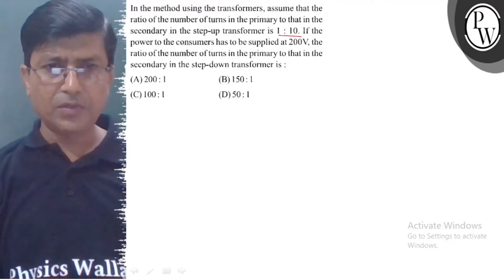If the power to the consumers has to be supplied at 200 volt, find the ratio of number of terms in the primary to that in secondary in the step down transformer.